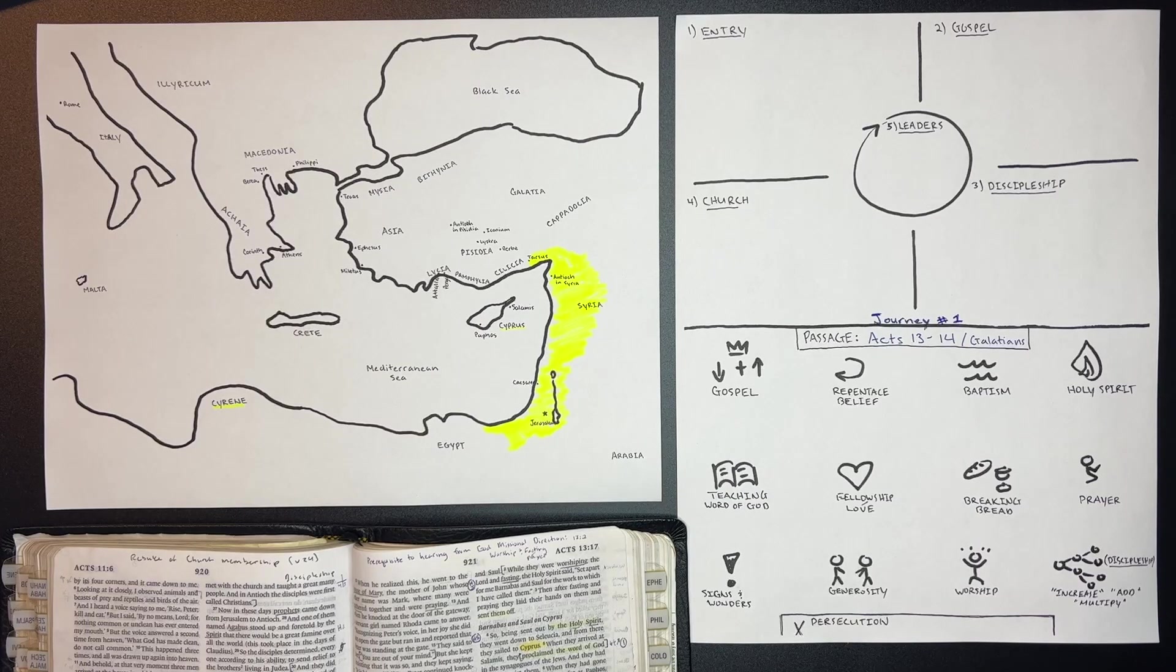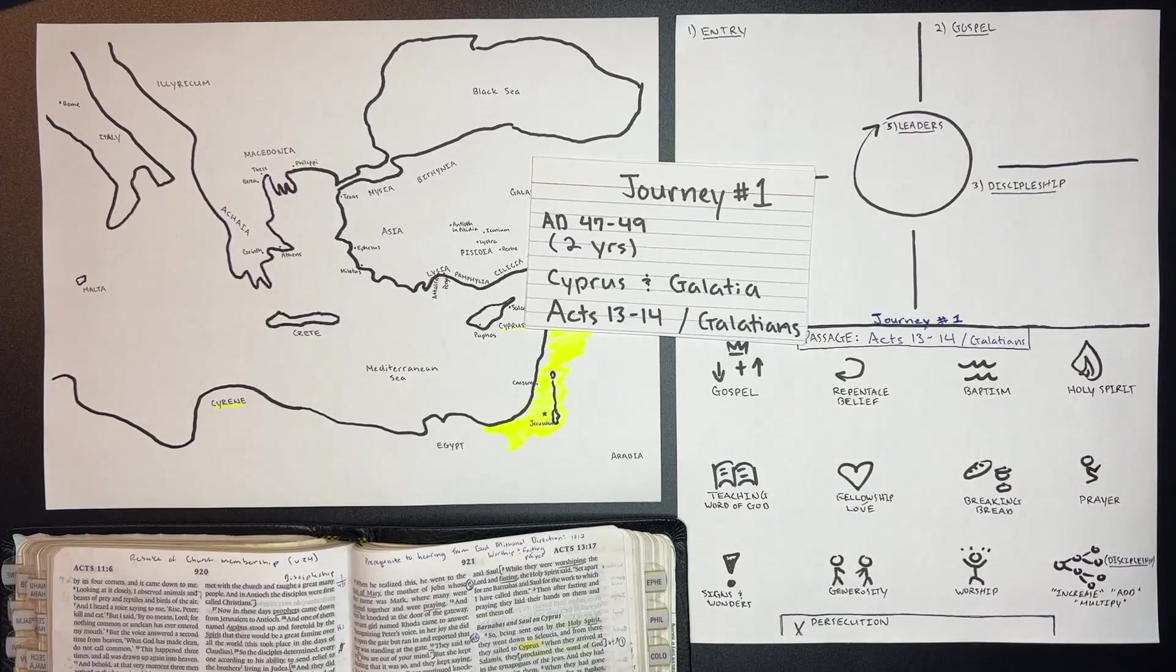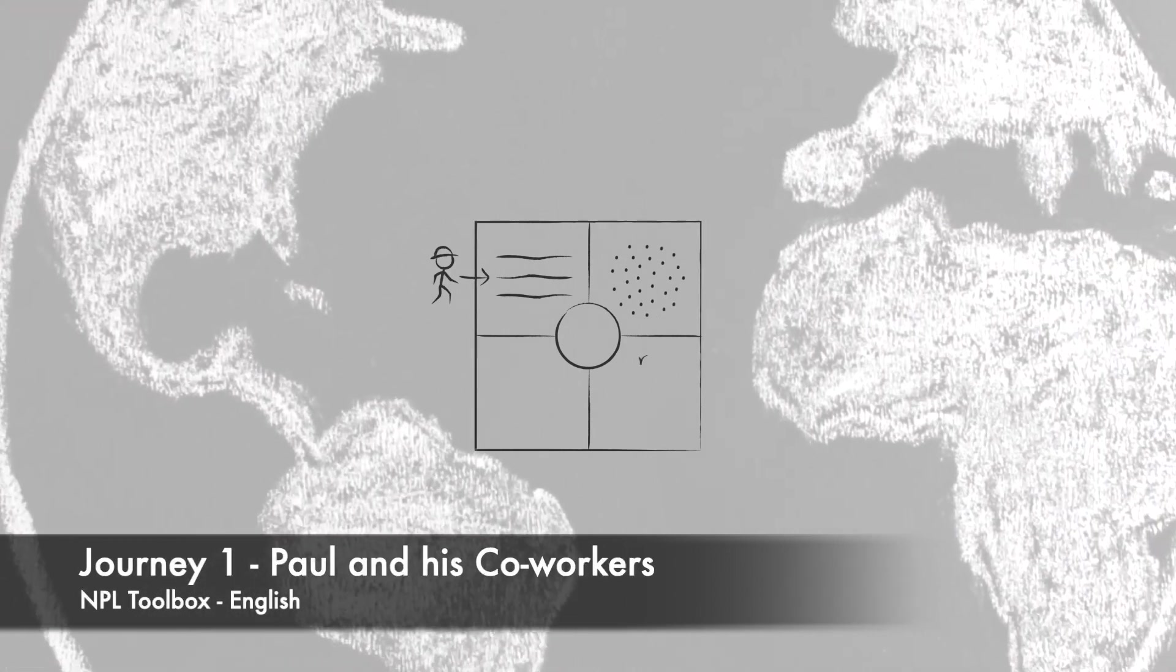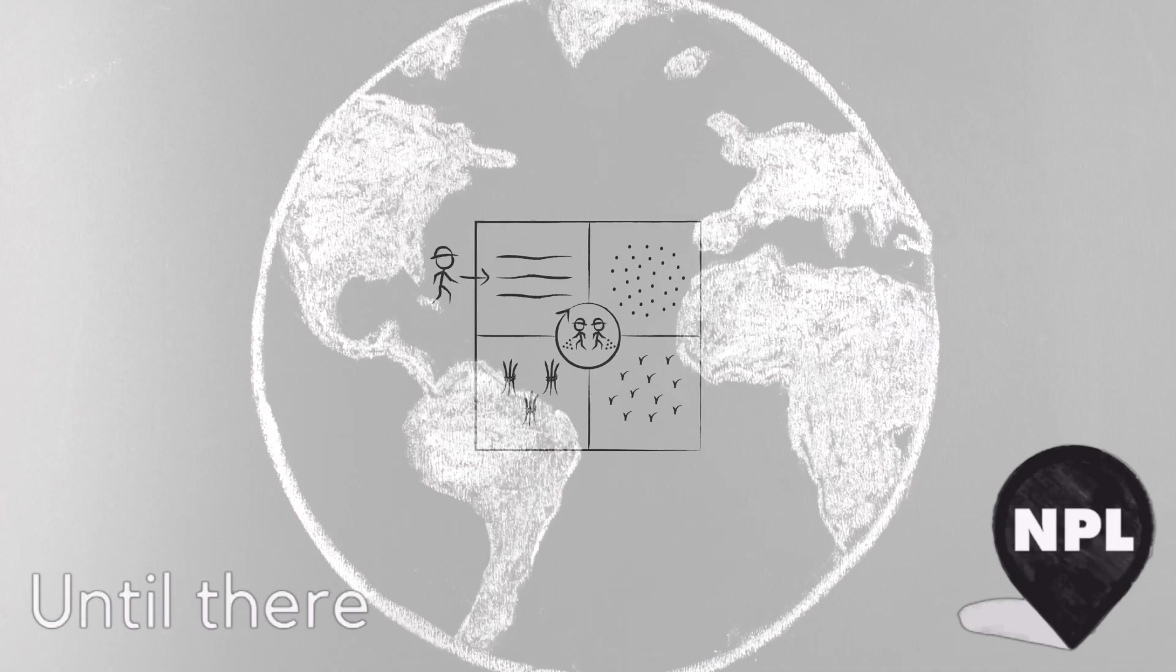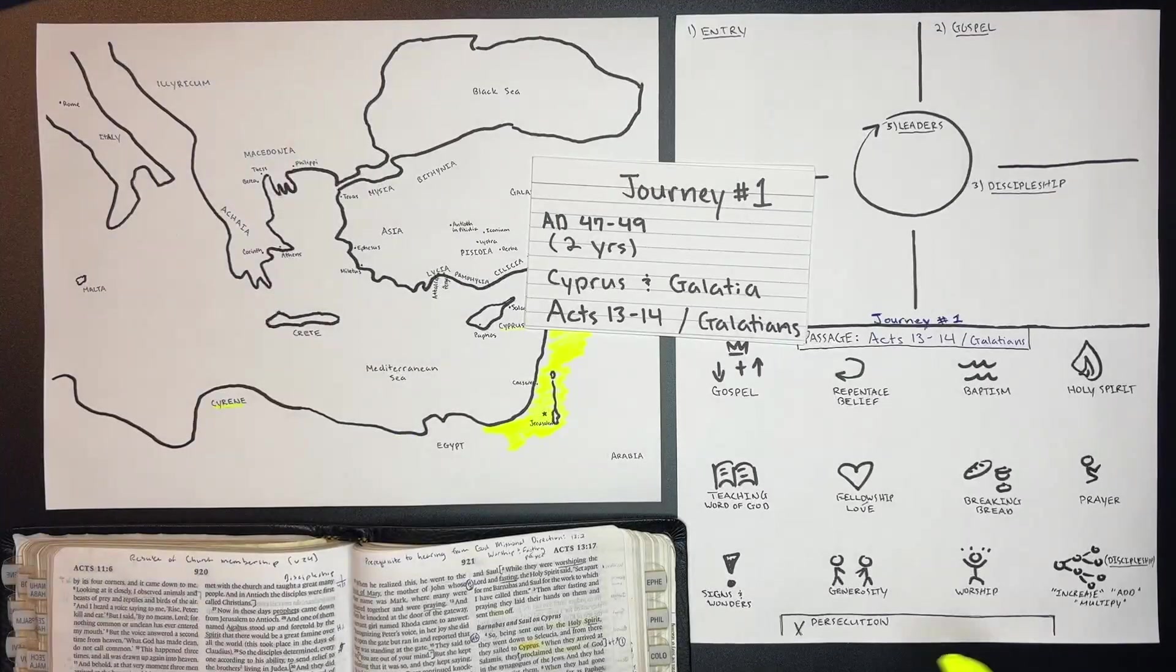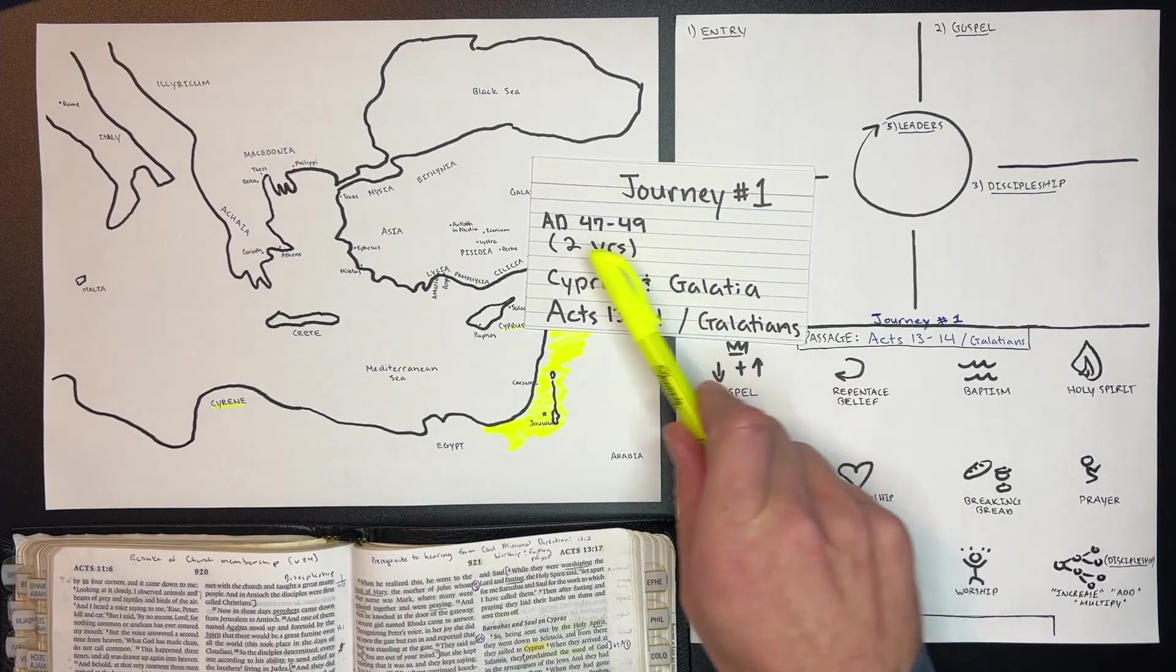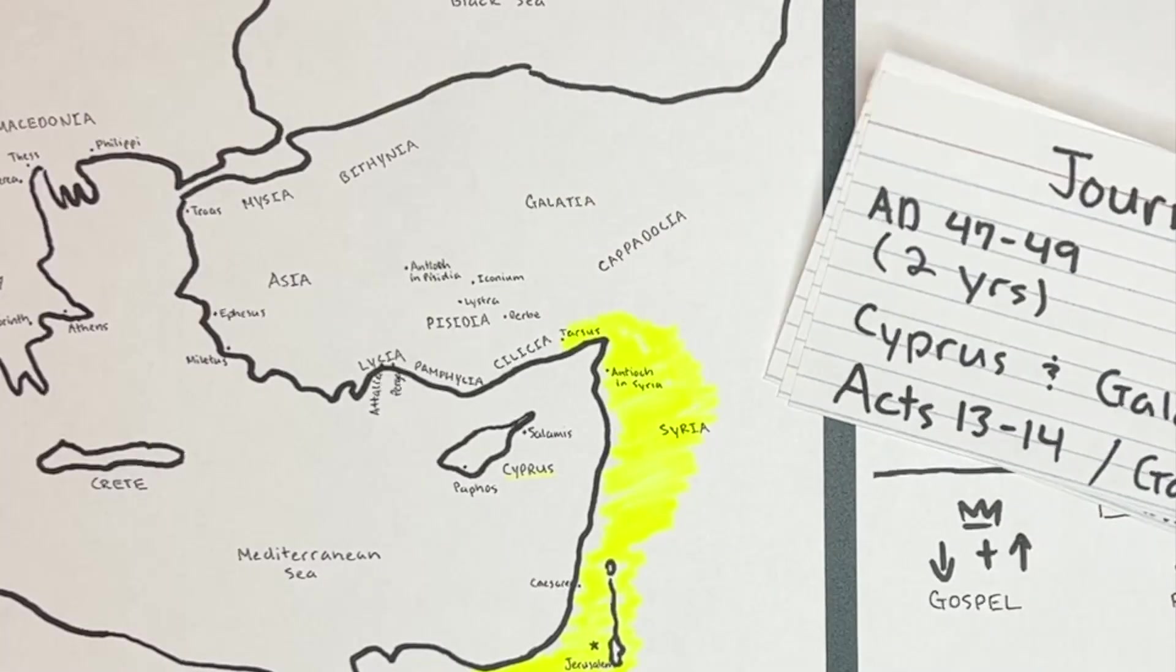Welcome back. In this first of a four-part video series, we're going to study the first journey of Paul and his co-workers. The time of this journey was from AD 47 to AD 49, so about two years. The primary regions covered were Cyprus and Galatia.